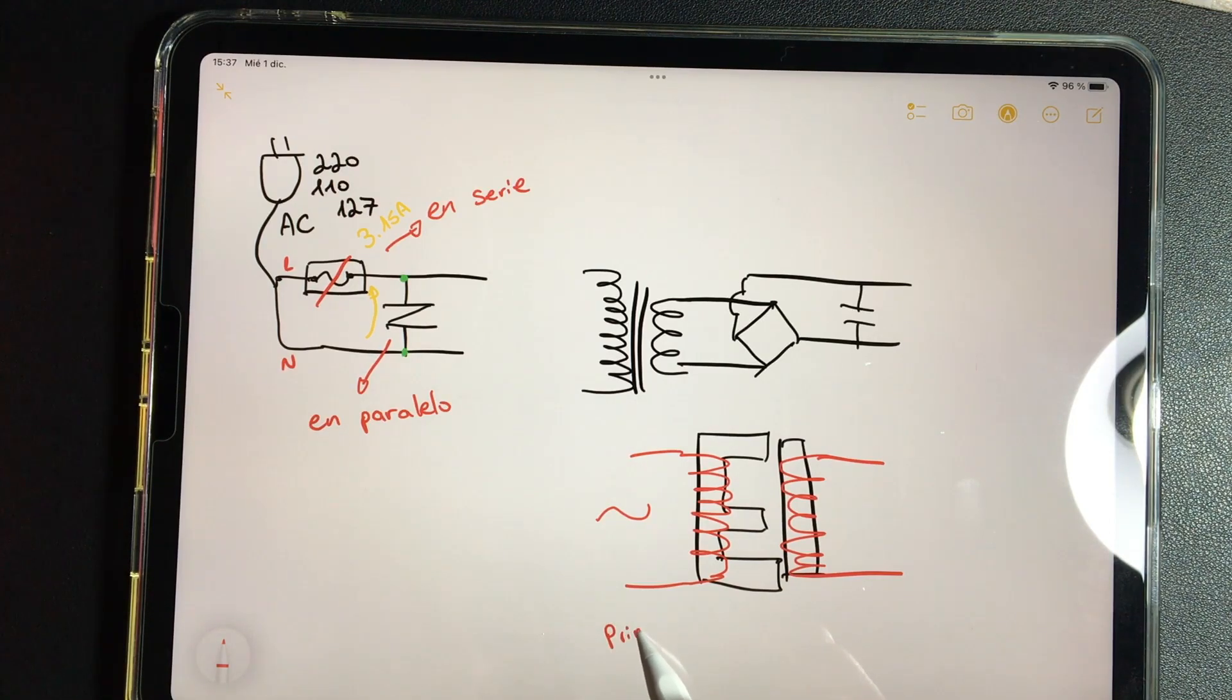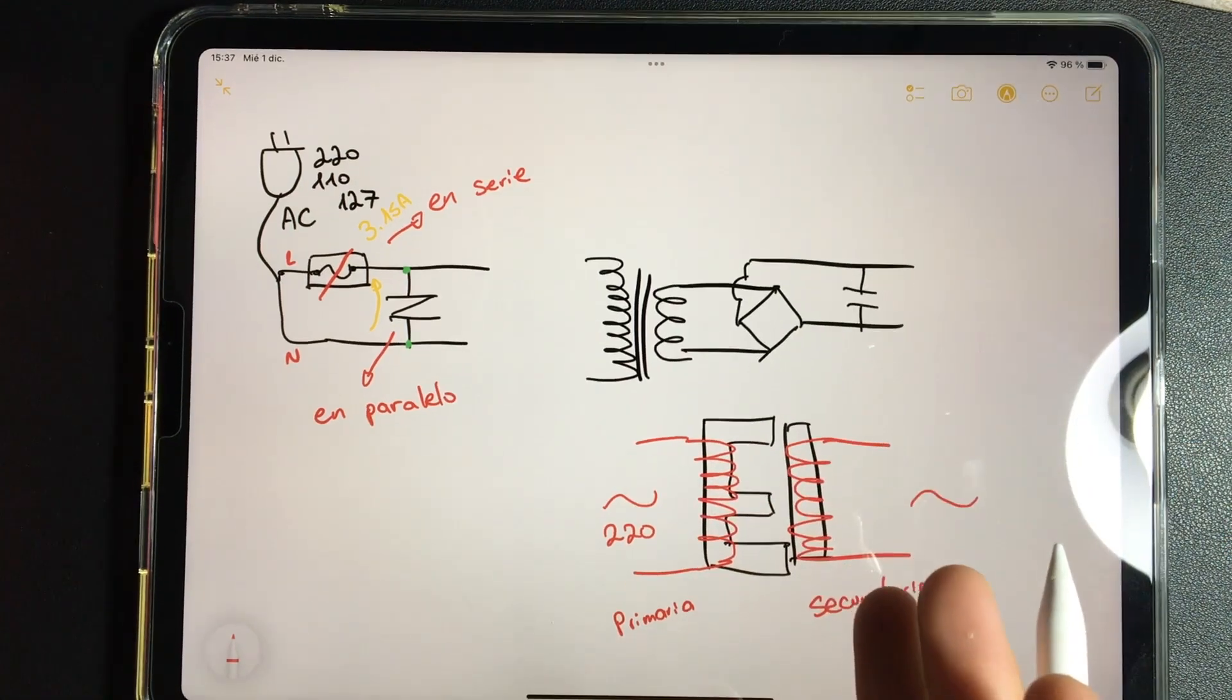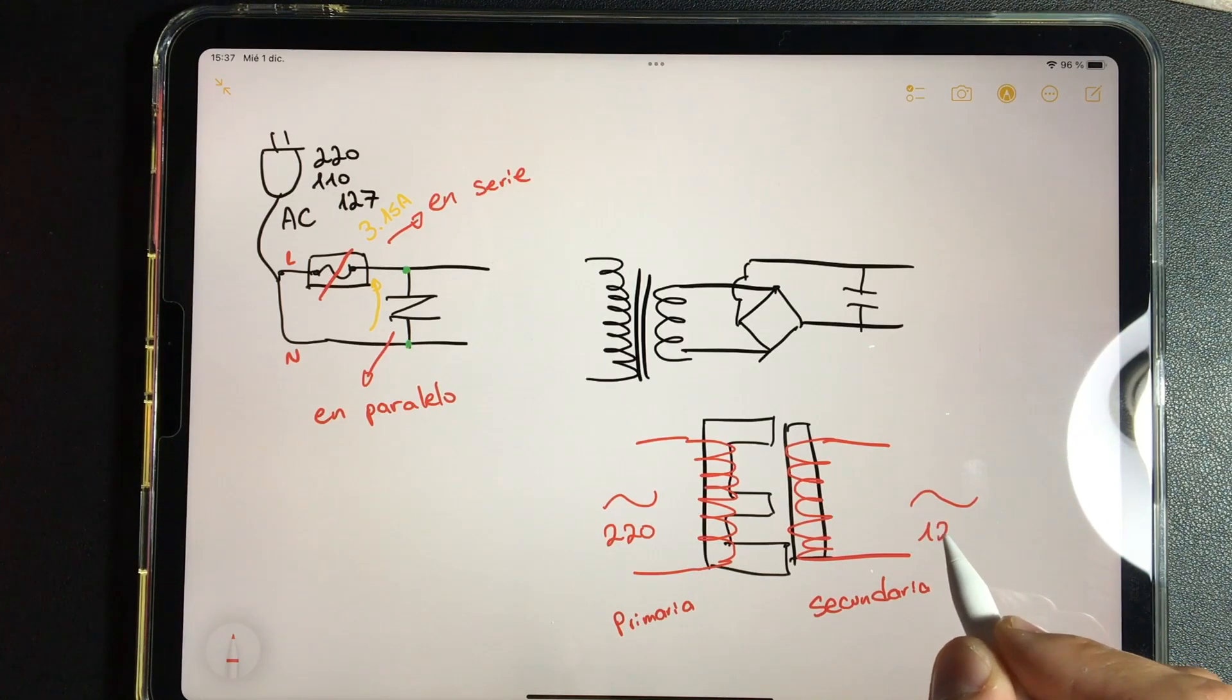Primary and secondary, and makes the electrons come out the other side with a sinusoidal wave but with different voltage. If we have a 220 volt input here, the output will depend on how the transformer is made, and in air conditioning units we will generally find a 12 volt output.